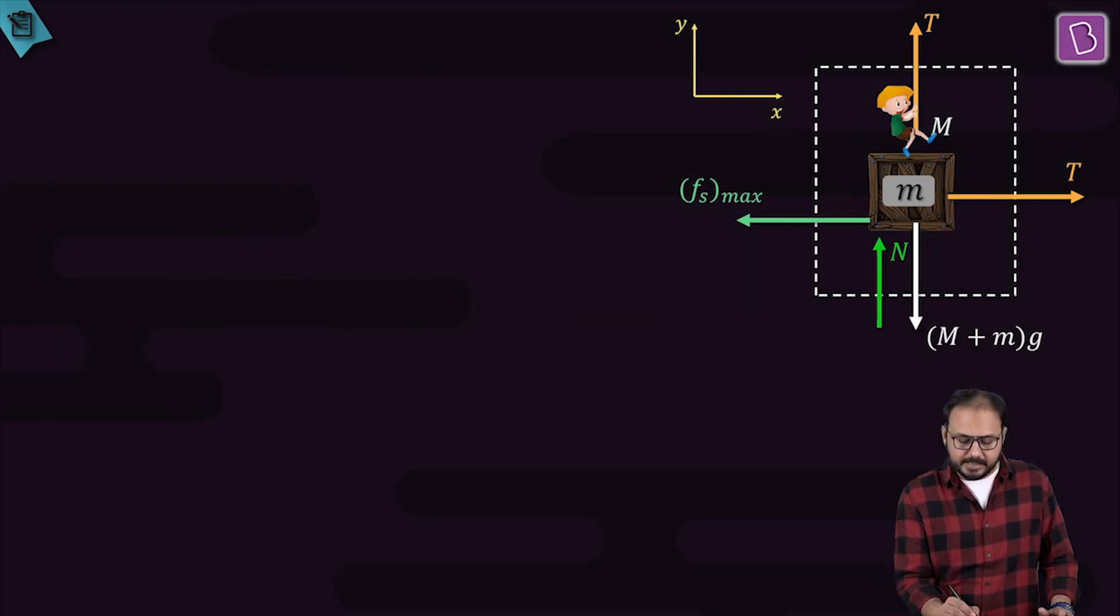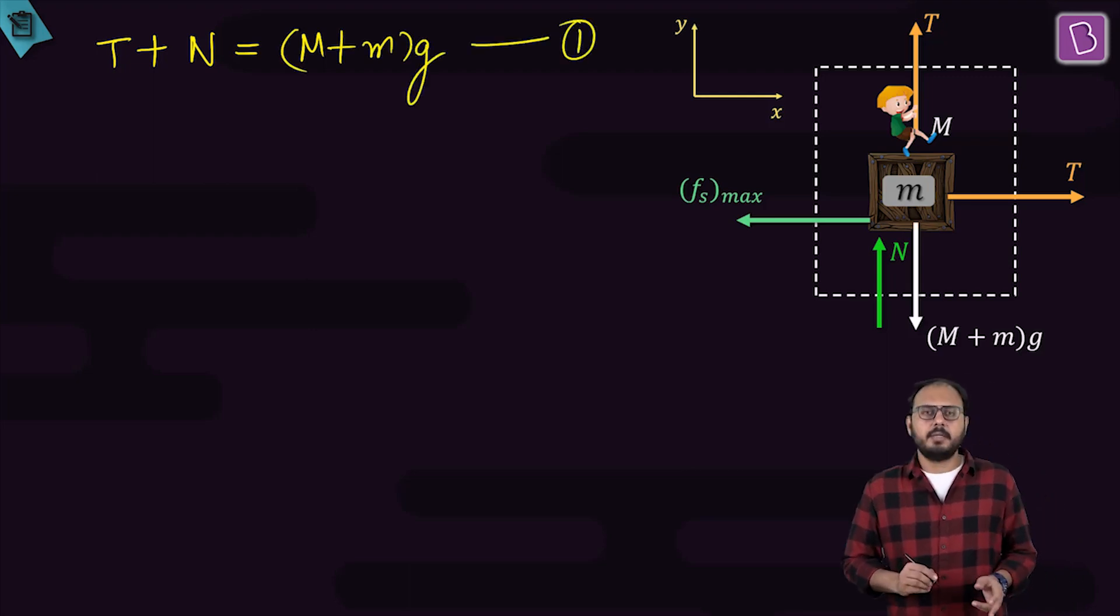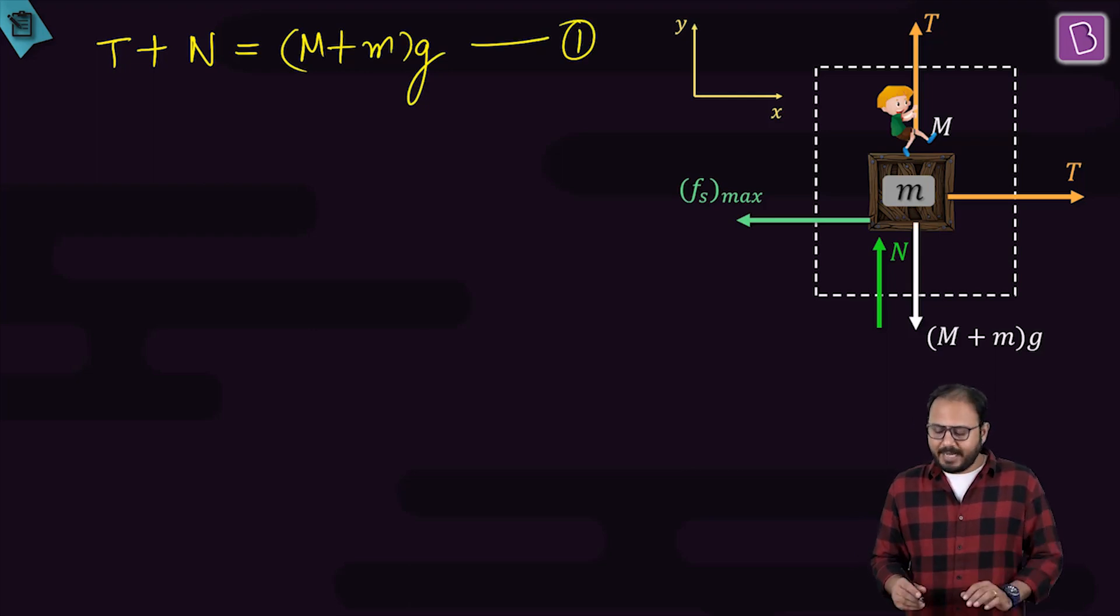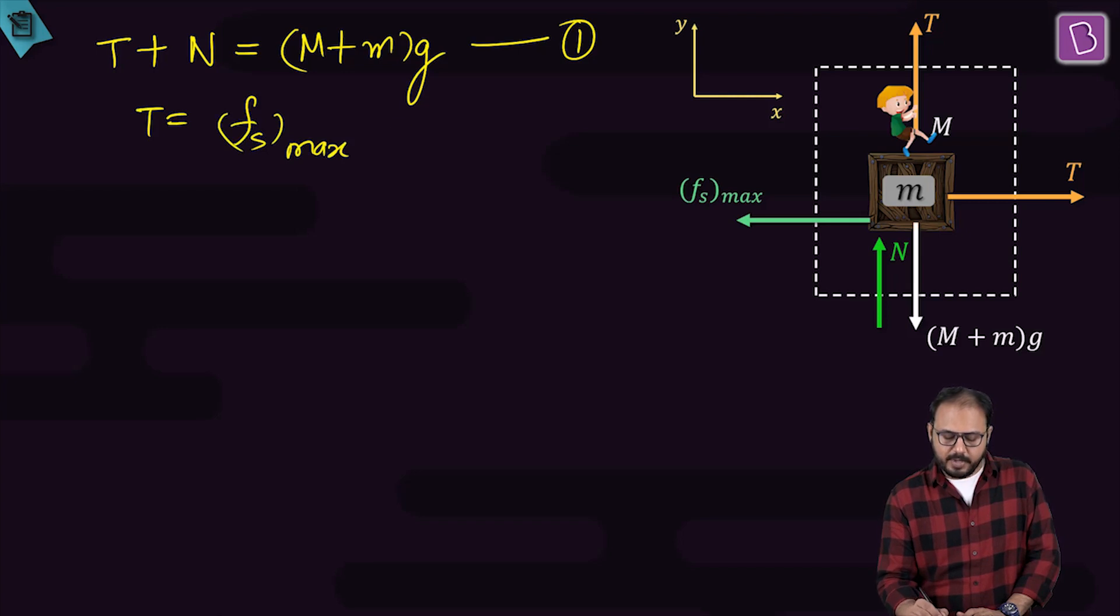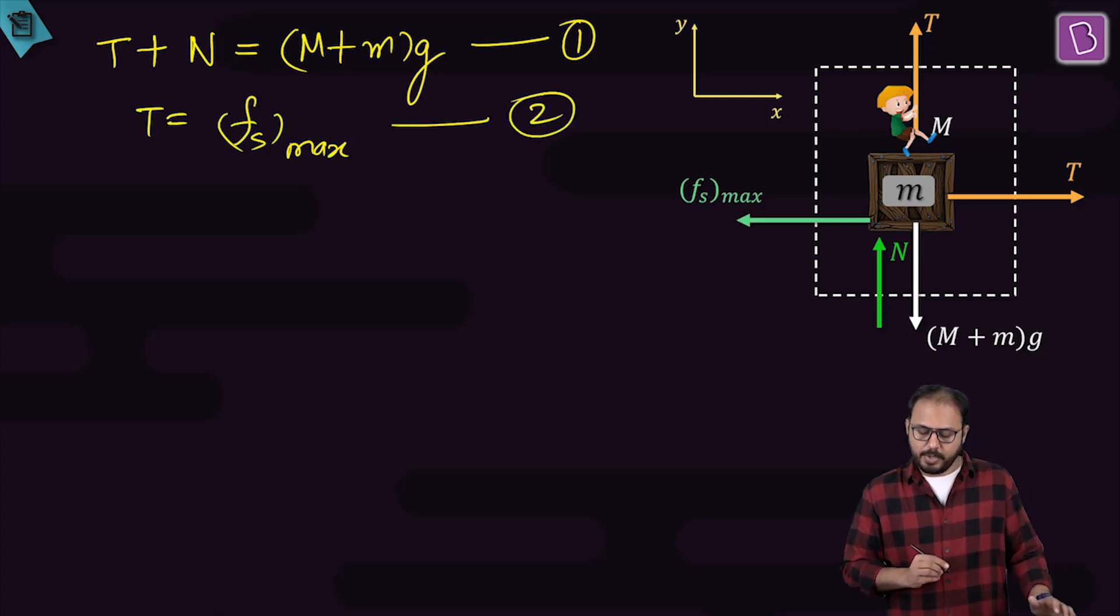Balance the force in x. T plus N is equal to M plus Mg. Equation 1. This is for equilibrium in y direction. Agreed? Good. For equilibrium in x direction, T is equal to Fs max. Equation 2.